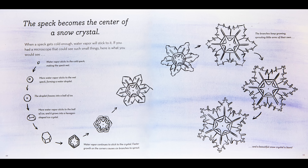The speck becomes the center of a snow crystal. When a speck gets cold enough, water vapor will stick to it. If you had a microscope, you could see such small things. Water vapor sticks to the cold speck, making the speck wet. More water vapor sticks to the wet speck, forming a water droplet. The droplet freezes into a ball of ice.